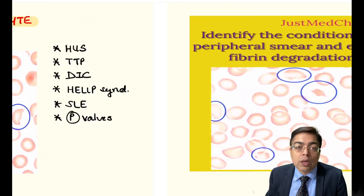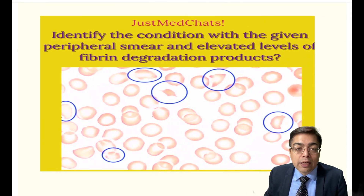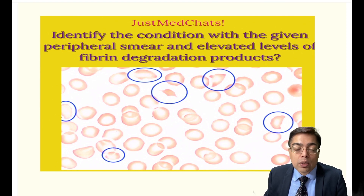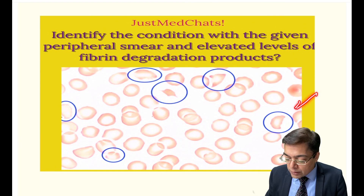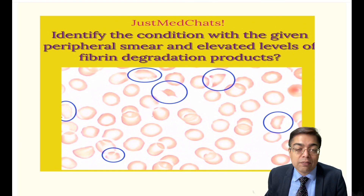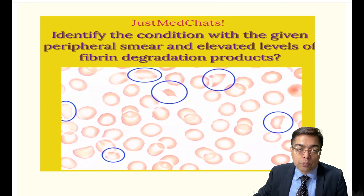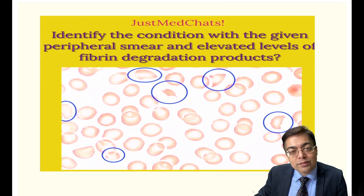Now here's a simple exam question for you. If the question talks about a peripheral smear showing schistocytes, but also mentions that the patient has elevated values of fibrin degradation products, what's the first condition that should come to your mind? Quickly type your answers in the chat box below. See you soon.